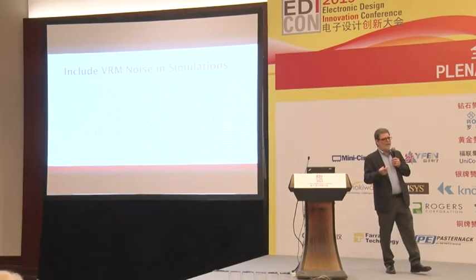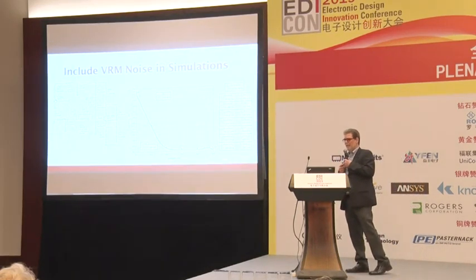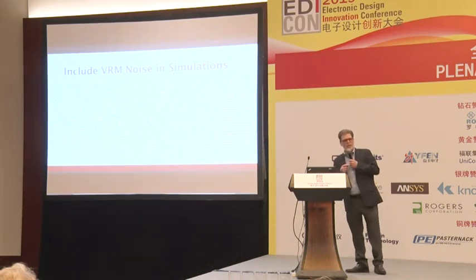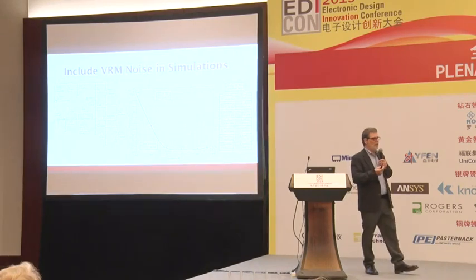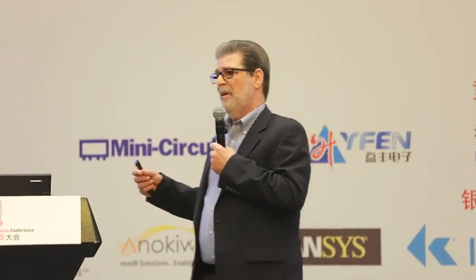Most jitter in distributed systems today actually comes from the power supply. If jitter is induced by power supply noise, then we can't leave out the voltage regulator in the assessment, because the voltage regulator itself is actually the single largest source. That also means that to simulate jitter in our systems, we must simulate it with the power supply — our power systems and RF and microwave systems must be simulated simultaneously within the same simulator.